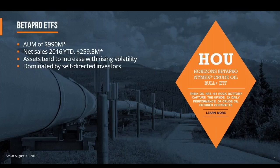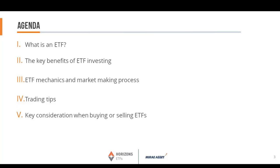Horizons ETFs trading largely happens in the self-directed channel. The BetaPro segment has an AUM of just shy of a billion dollars, with net sales in 2016 year-to-date of a quarter of a billion dollars. These assets tend to increase with rising volatility. We are still at what would be described as historical lows — somewhere between 18 and 22 percent historically, and we've seen an average this year of about 11 or 12 percent. It has been a low volatility environment largely since quantitative easing has been in place.